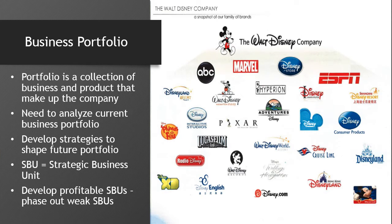A business portfolio is a collection of businesses and products that make up a company. The best business portfolio is one that basically best fits the company's strengths. Disney's business portfolio includes things like Pixar and Marvel, but also Disneyland resorts in Shanghai, consumer products, and a cruise line — and that's not even everything. When we start talking about this many companies, one of the major activities in strategic planning is a business portfolio analysis.